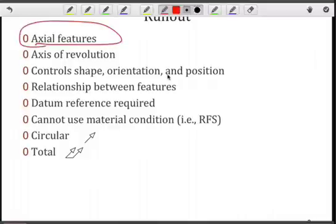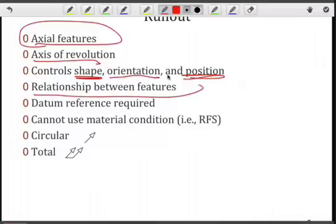And by axial, it implies an axis of revolution. It will control both shape, orientation, and position, which again sounds quite similar to the profile tolerance. And we will have a relationship between features, again implying that a datum reference will be required.